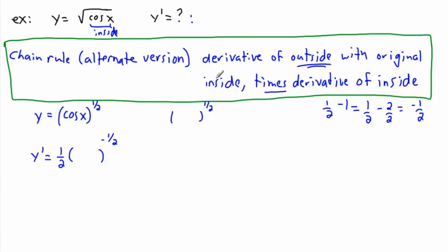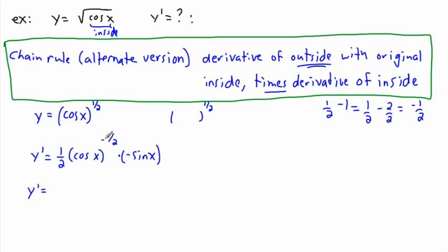So that becomes the derivative of the outside, evaluated with the original inside: cosine x to the negative one half. But we're not done — we still have to multiply by the derivative of the inside. The derivative of cosine is negative sine, so we multiply by negative sine x.